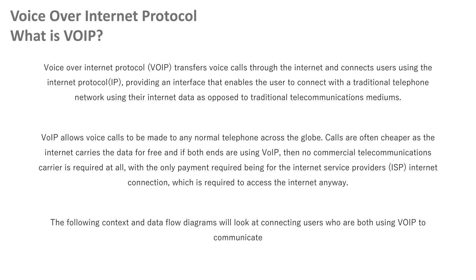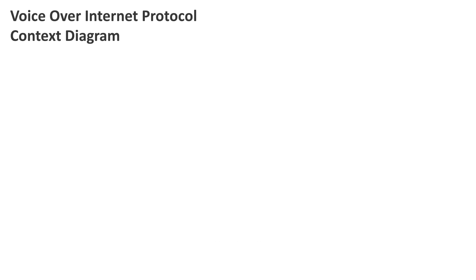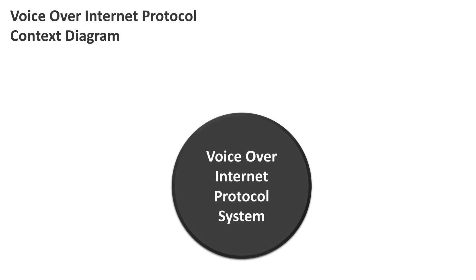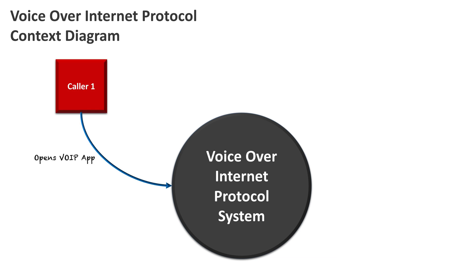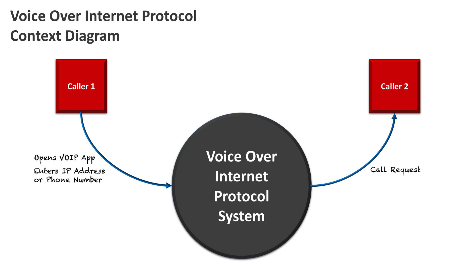The scenario we're looking at is someone using VoIP to call someone else on their computer. Looking at the context diagram: we have the VoIP system with Caller 1, who opens the VoIP app and enters the IP address or phone number of the person they want to call. Once they enter that phone number, a request is made to call Caller 2, who has to answer their phone and accept the call.